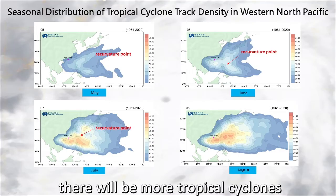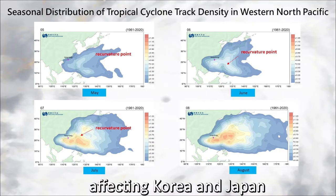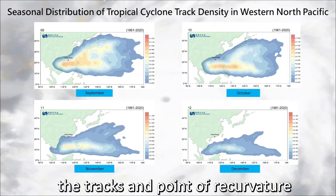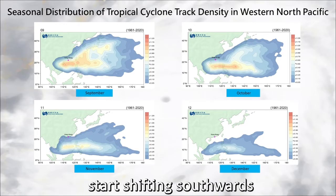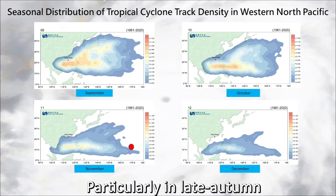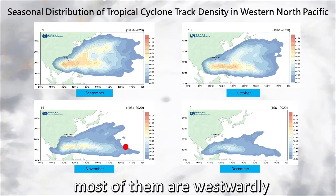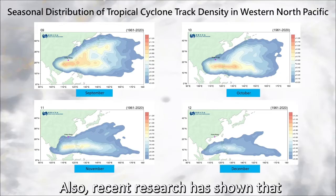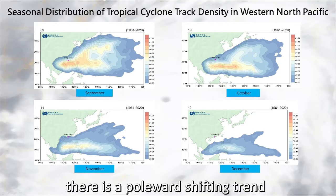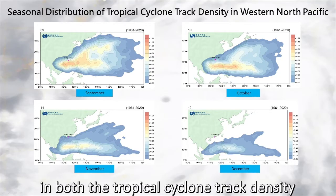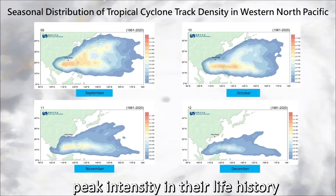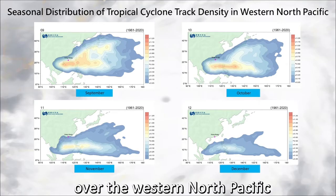There will be more tropical cyclones affecting Korea and Japan. As autumn commences, the tracks and points of recurvature start shifting southwards, particularly in late autumn, when most of them are westwardly straight-moving tracks. Also, recent research has shown that there is a poleward shifting trend in both the tropical cyclone track density and the latitude where tropical cyclones reach peak intensity in their life history over the western North Pacific.